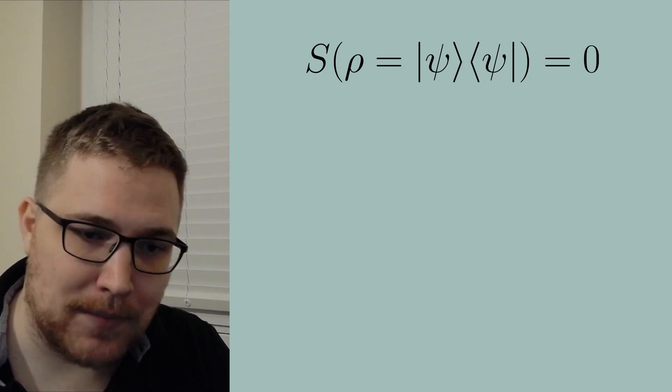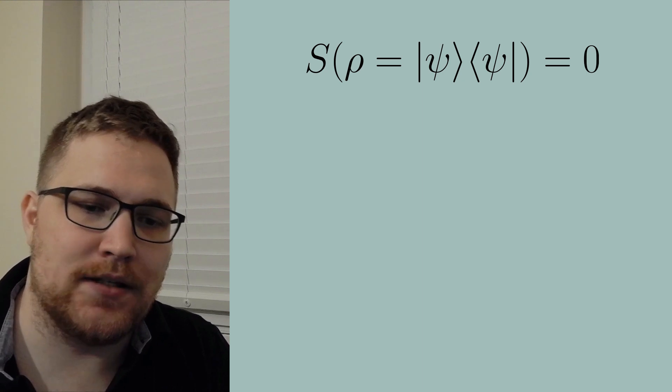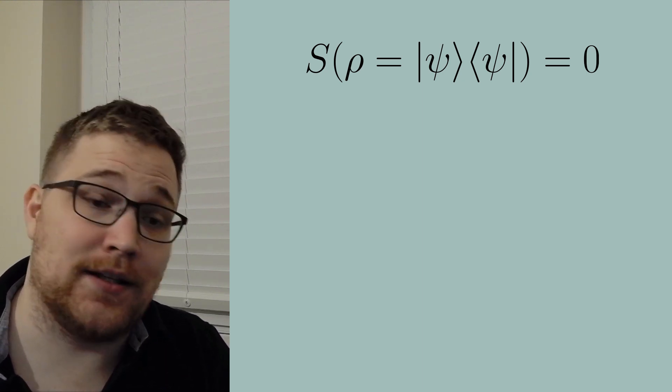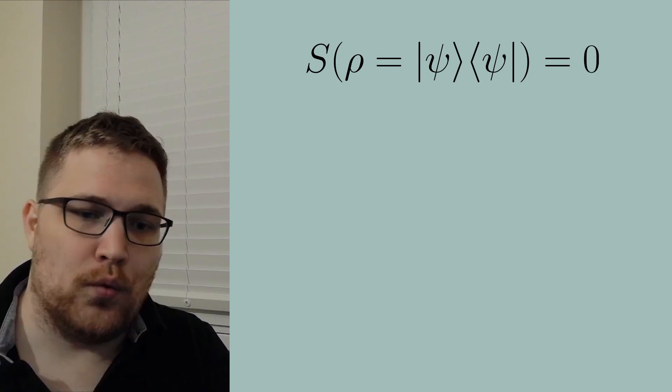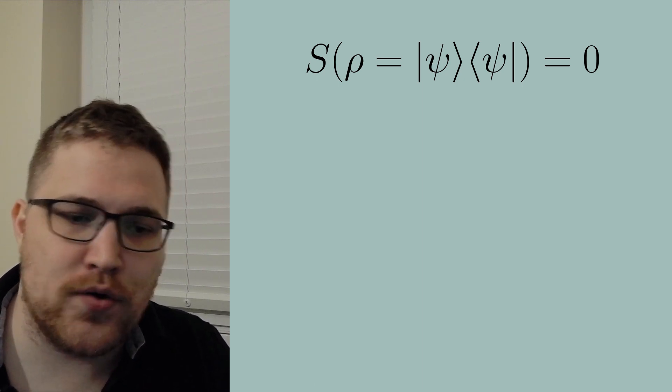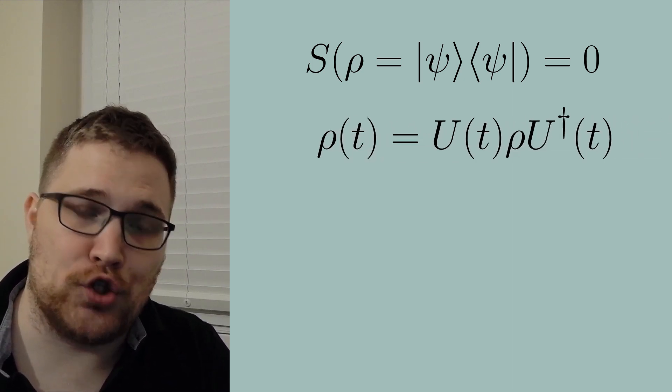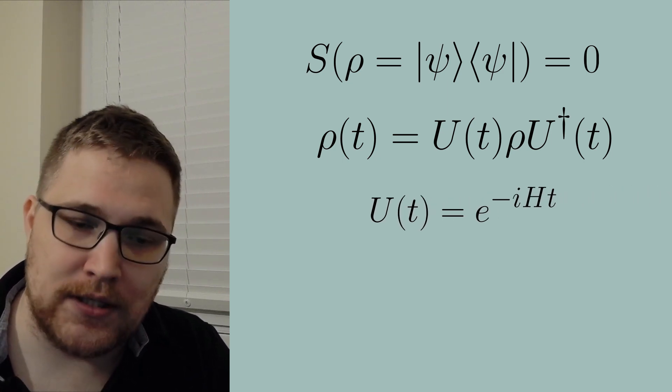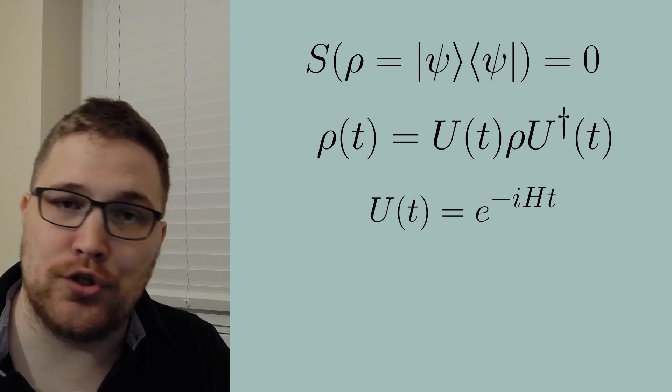It in particular is maximized for the maximally mixed state. The second observation is that the von Neumann entropy for unitary dynamics which our isolated system is experiencing is time independent. We can evolve our density matrix with the following equation where U(t) here is the usual generator of dynamics e to the negative i Hamiltonian times t where I've set h bar is equal to one and this is a unitary matrix.